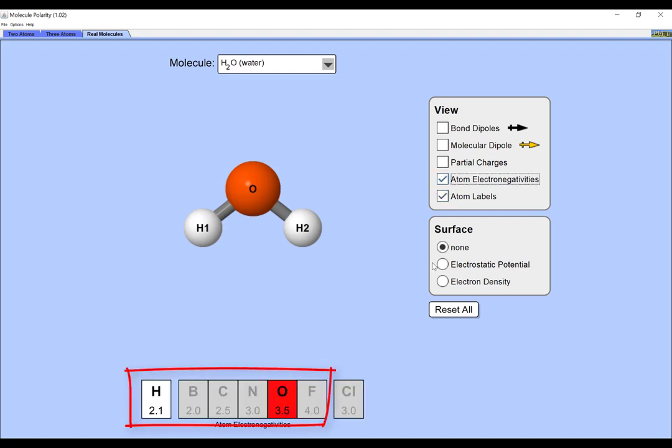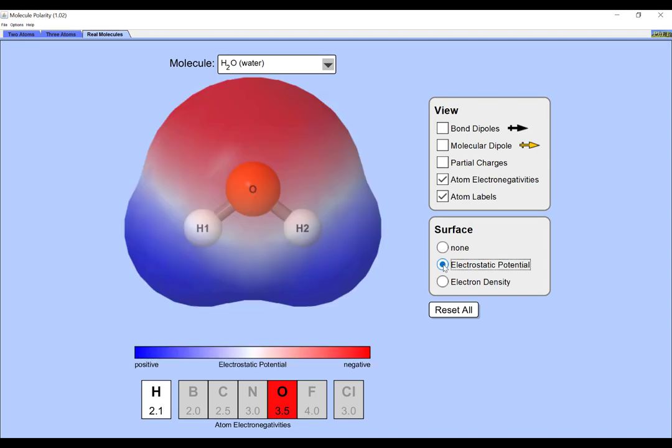This means that one end of the molecule, the oxygen end, has much more electron density than the other end. Here's a simulation from FET that illustrates the situation.